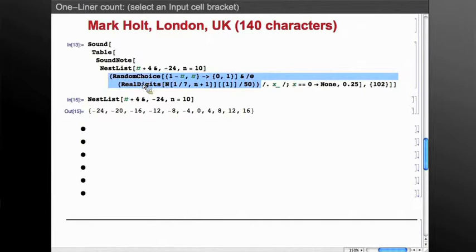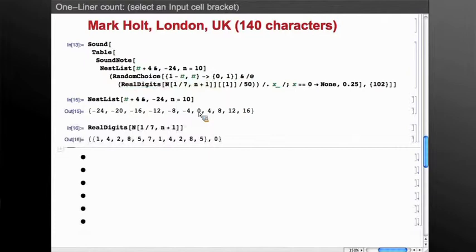And then this other code here picks out elements of that chord and plays them in sequence. So how does it pick out the elements? Let's look at this sub-expression here, RealDigits of 1/7. That gets us a list of digits which is varied and sort of has a random character to it. We pick out the first element of that, which is this list here.